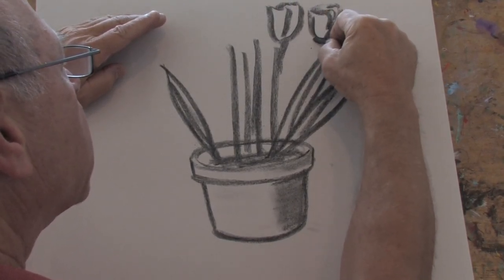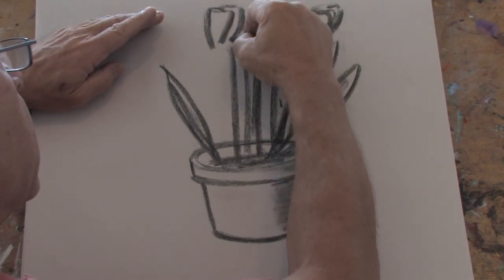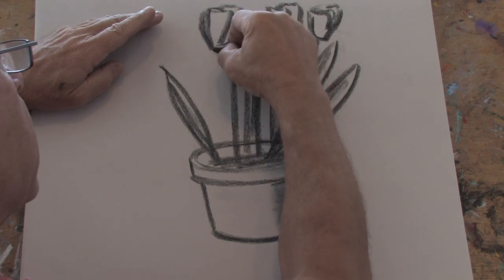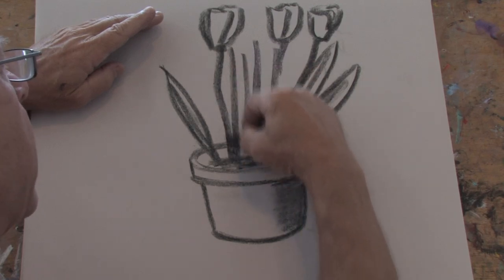Here I'm just getting the shapes of the tulips and putting them in here, getting a little shape like that, and a little stem at the base. Here's where the stem comes down into the pot.